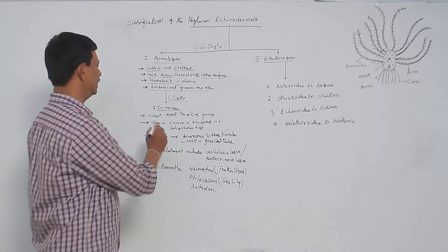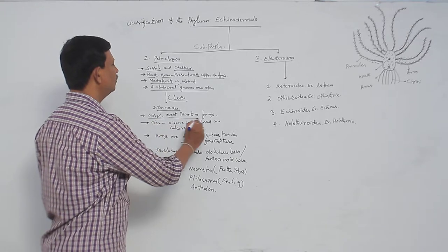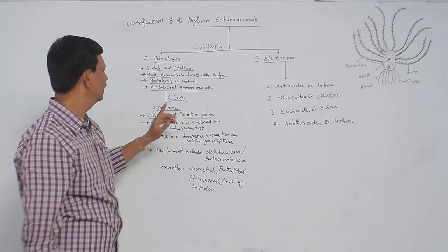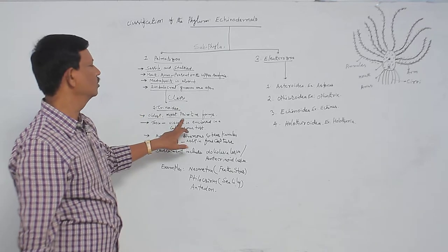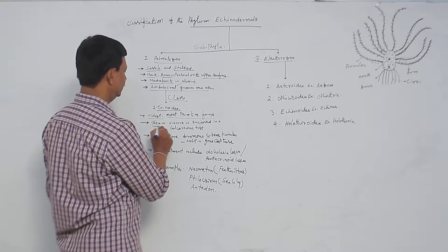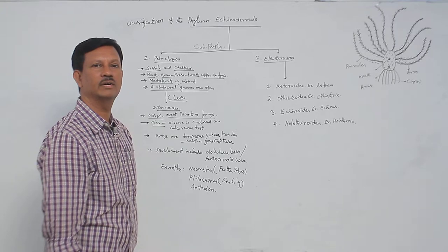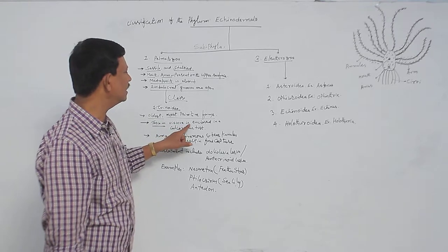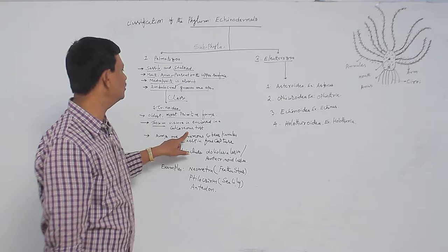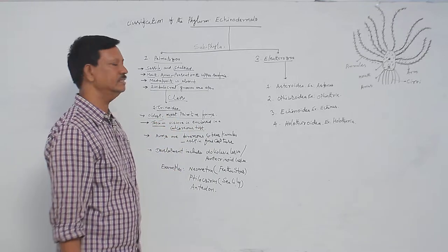Crinoidea are the oldest animals in the phylum Echinodermata and the most primitive forms — primitive characters are present in this class compared to other classes. A theca, which is a bag-like structure, is also present. The viscera — the important organs of the body — are enclosed inside a calcareous test. This bag-like structure covering the digestive and other systems is known as the theca.